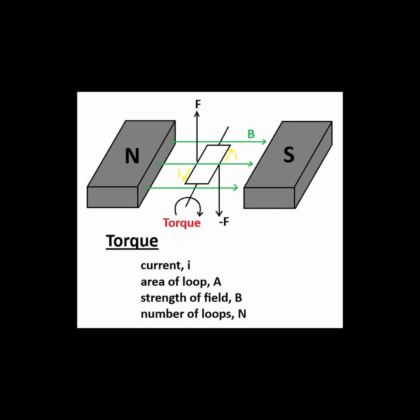The torque of the motor is proportional to the current in the wire, the area enclosed by the coil, the strength of the magnetic field, and the number of loops in the coil.